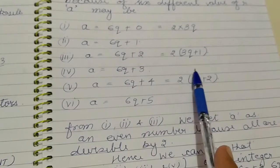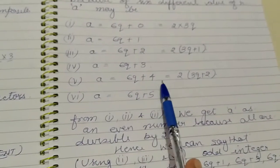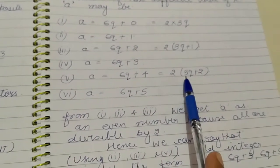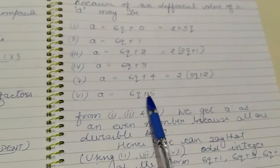a equals to 6q plus 3 which is not a multiple of 2. a equals to 6q plus 4 again a multiple of 2 and a equals to 6q plus 5.